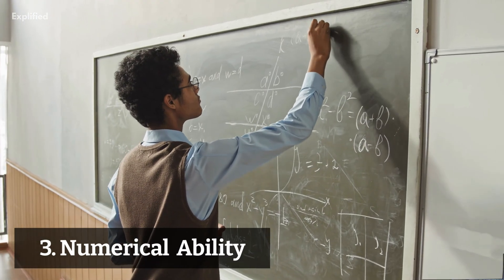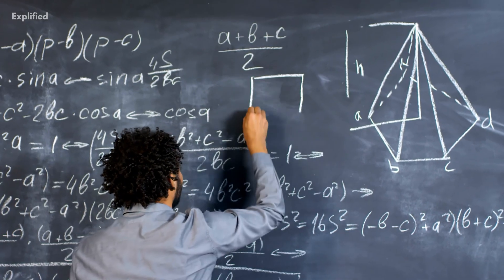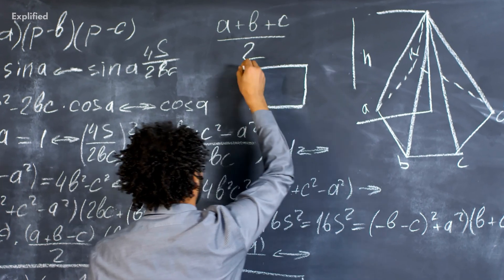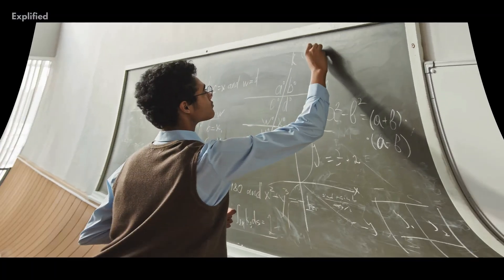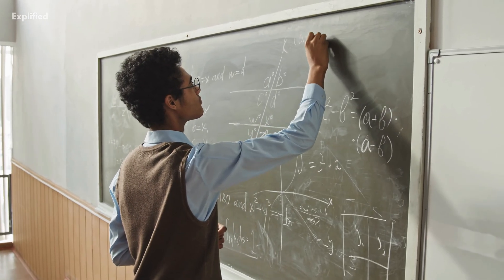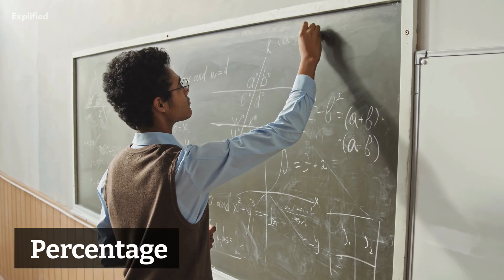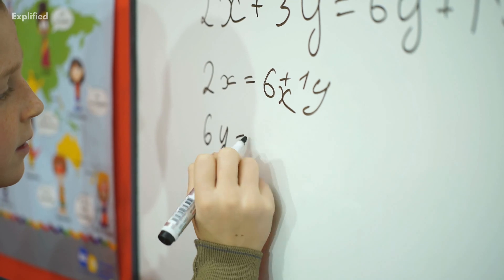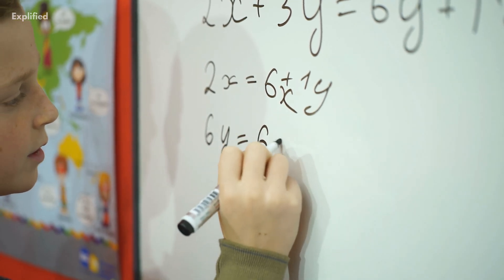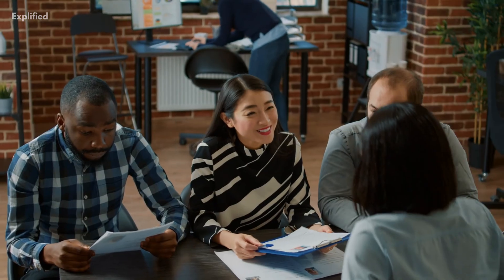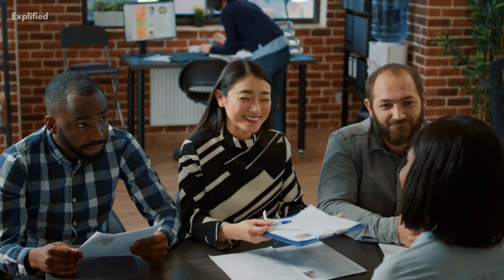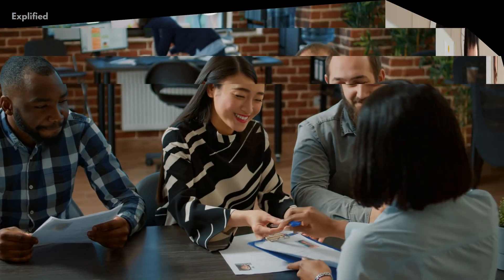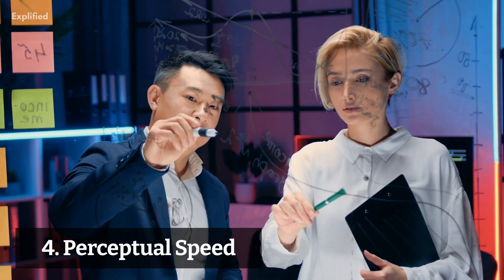The third ability is numerical ability, which measures your comfort and accuracy with numbers. There are different branches such as ratios, percentages, addition, subtraction, etc., and your accuracy in all these fields determines your numerical ability. There are some companies that hire people especially for this kind of work — essentially, how comfortable you are with numbers is what matters in this area.